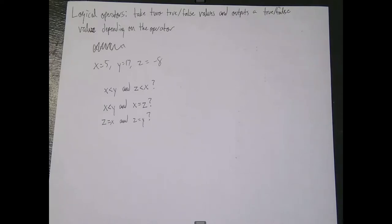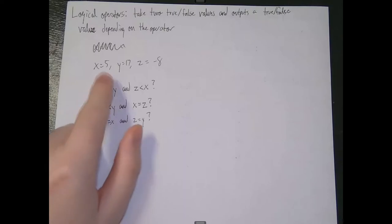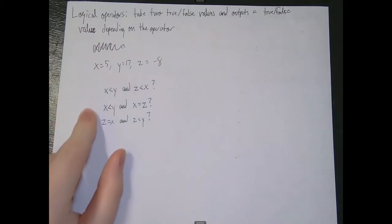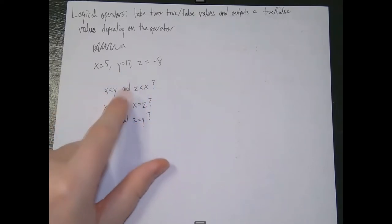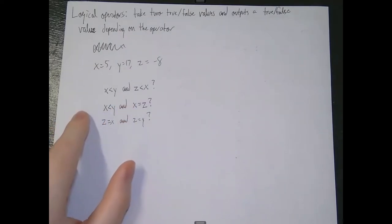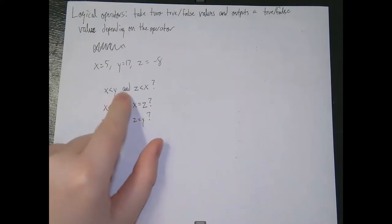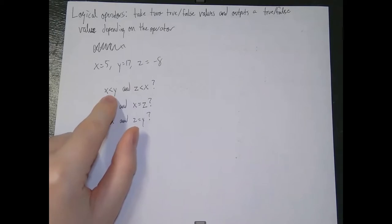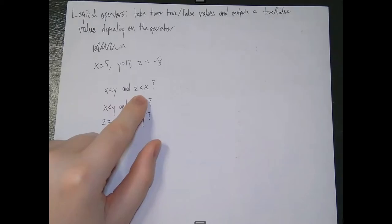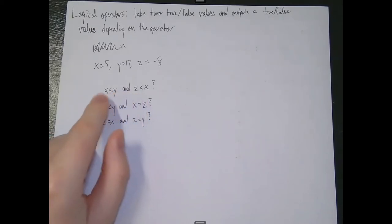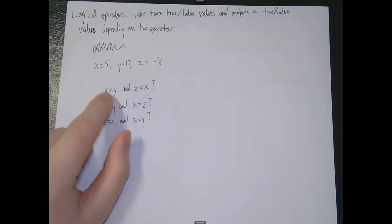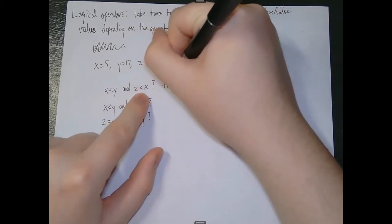Logical operators take two true or false values and output a true or false value depending on the actual operator. I have the same values of x, y, and z used at the beginning of the video. We have statements connected with 'and.' X is less than y AND z is less than x: x < y is true because 5 is less than 17, and z < x is true because -8 is less than 5. True AND true — are both statements true? Yes, so this whole thing is true.